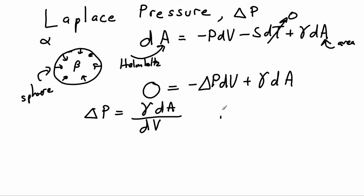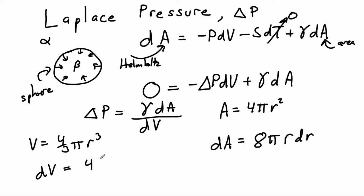So A is equal to 4πr², true for any sphere. And dA is just the differential of that, so 8πr dr. We can then do the same thing with volume. Volume for a sphere is equal to 4/3 πr³, so dV is going to be 4πr² dr.